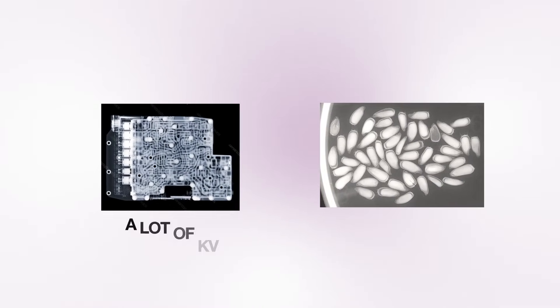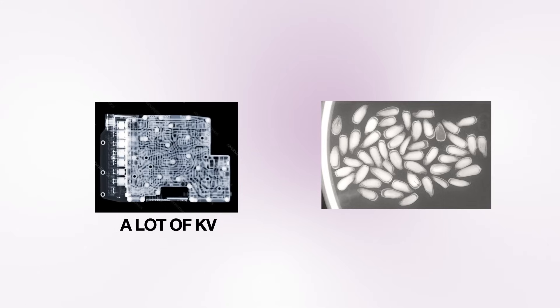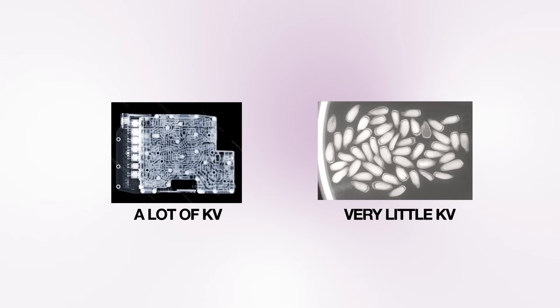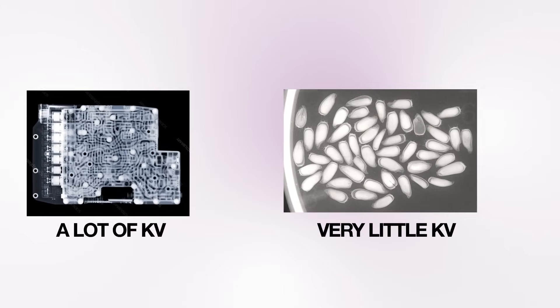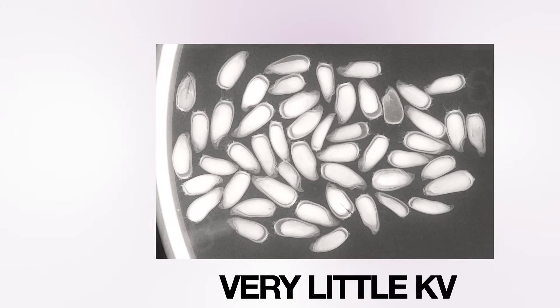One needs a lot of kV and mA to penetrate a block of steel. The other is the opposite—very little kV and mA to give you enough image contrast on a very thin seed.